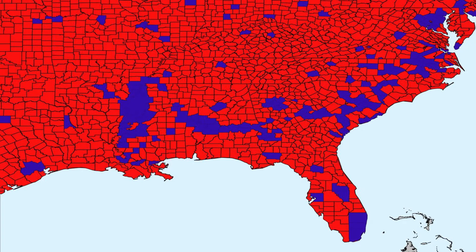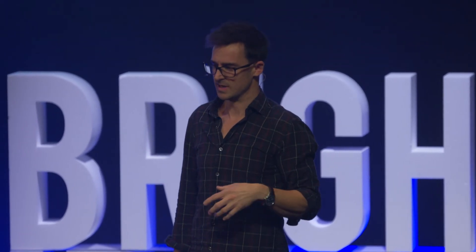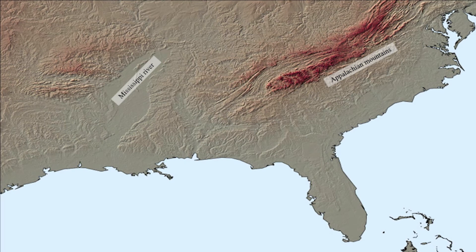But what you can also see is this great crescent arcing right across several states in the American South, which doesn't correlate to anything you can see on the ground. If we peel off the political map and look at a landscape map, a geographical map,